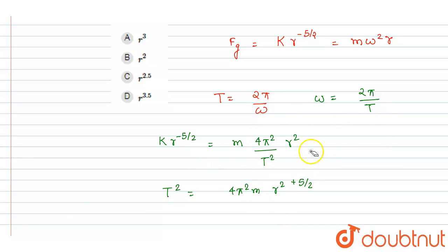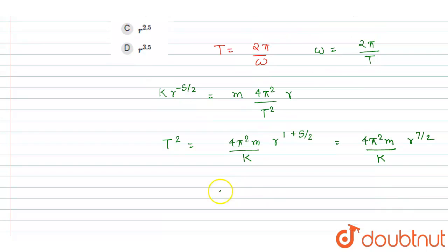This will be not power 2, it will be power 1. So if you see here you got 4π squared m, and yes, k is also there in the division.